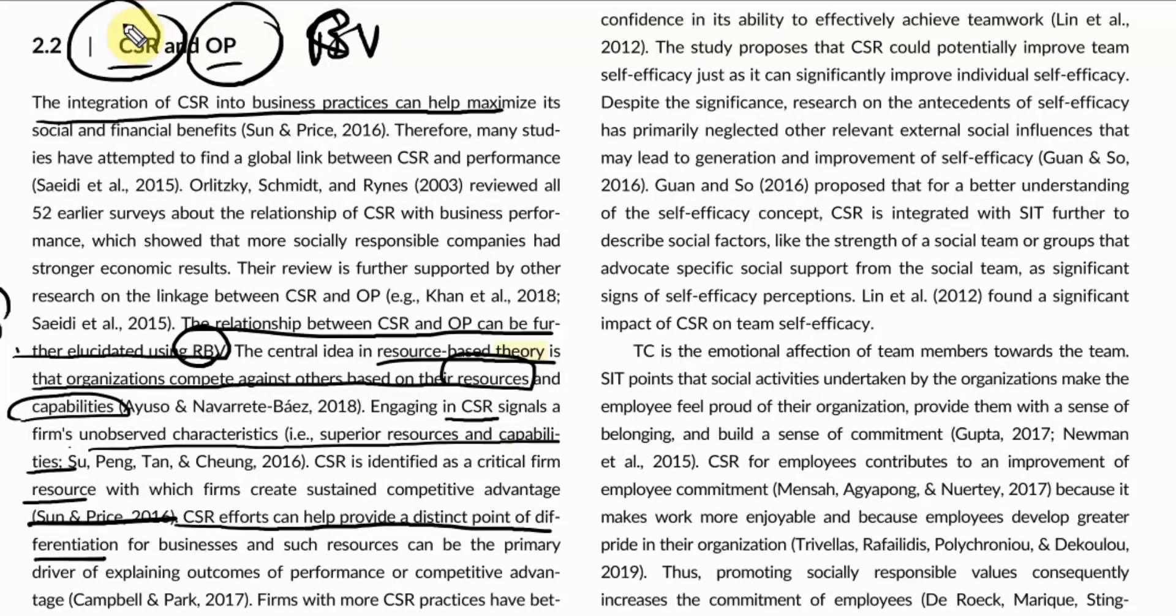Now, you are building an argument trying to link CSR with OP based on RBV. How? First, you explain that is CSR a resource? Yes. Is this resource helpful in improving organizational performance or elements of organizational performance? Yes. So, this is how you build your argument based on the theory.